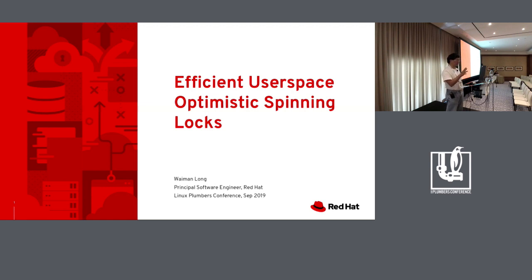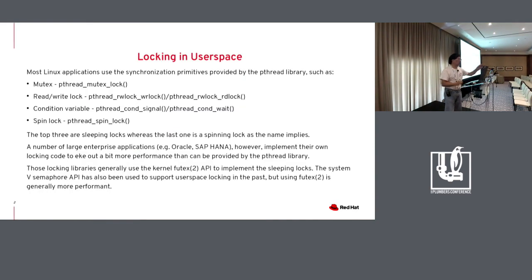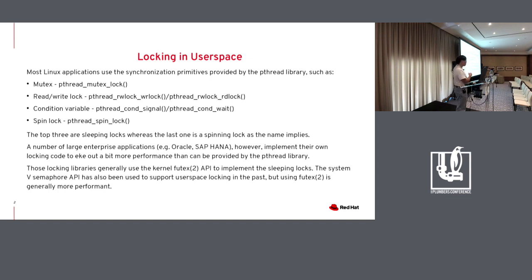Locking in user space: applications use the POSIX API provided by glibc to do locking, like the POSIX mutex, rwlock, or condition variable. They also have a spinlock — though not an actual spinning spinlock. Those three are the most frequently used by applications.